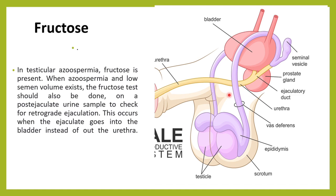We also do the fructose test on the post-ejaculate urine sample to check for retrograde ejaculation. In retrograde ejaculation, the semen instead of going out through the urethra goes back into the bladder. When we test that post-ejaculate urine and the fructose test comes positive, that suggests it could be because of retrograde ejaculation.